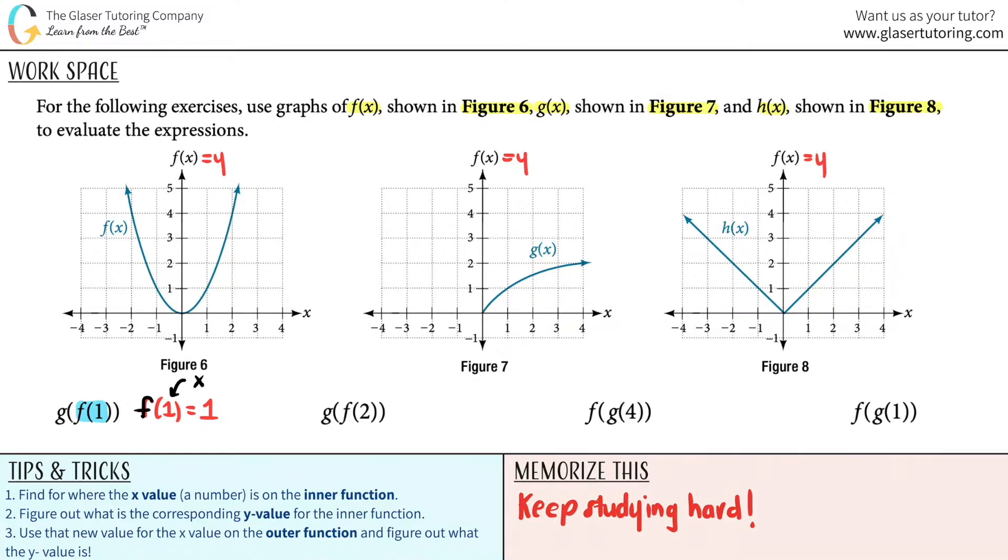Now we got to go to the outer function. The outer function was the g function. So g, but now what number am I going to use? It's the answer to what you had before. That's why we had to find the answer. Whatever this is, you plug it in for the next function. And that's number three. Use that new value that you found for the x value for the outer function and figure out what the y is.